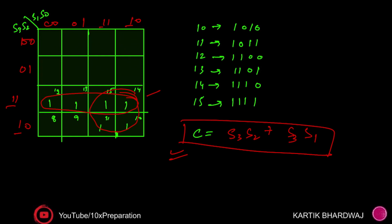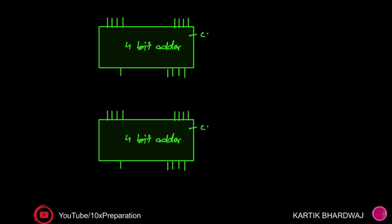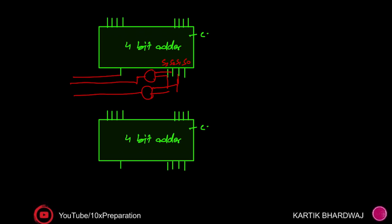From the K-map result, we can see that whenever the invalid state bits are present, those combinations indicate an out-of-range result. Using the expression S3·S2 and S3·S1, we can implement this with AND gates: one AND gate takes S3 and S2, another takes S3 and S1. The outputs of these AND gates are then fed into an OR gate, along with the carry-out C_out from the first adder.